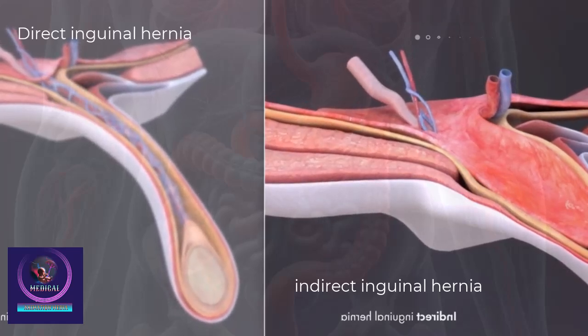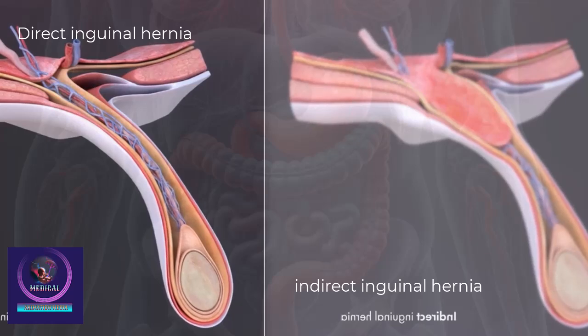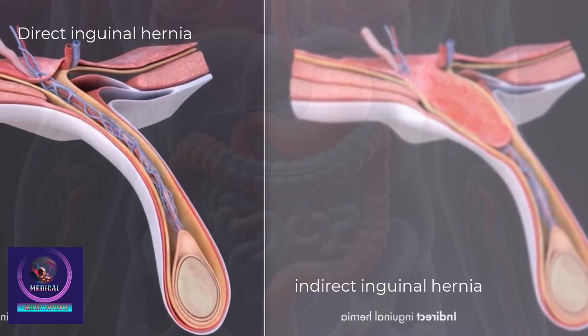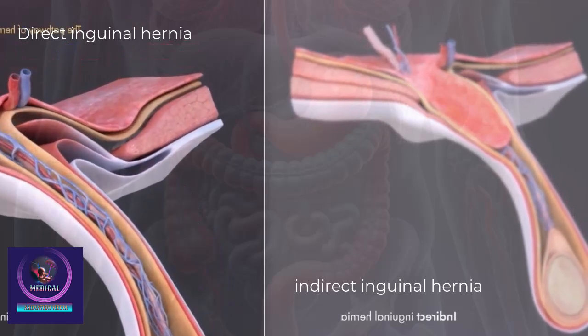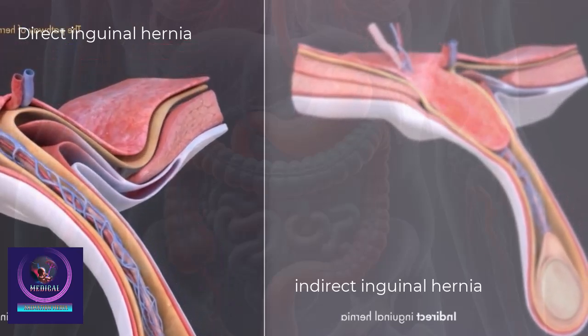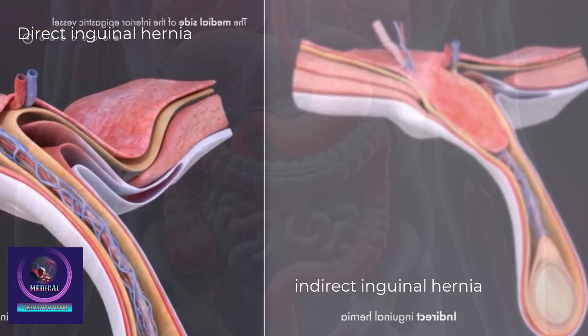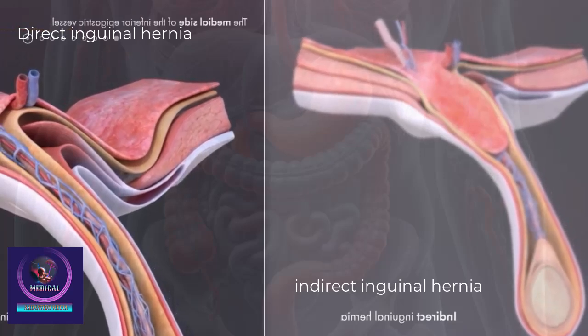Direct inguinal hernia comes behind the superficial inguinal ring by penetrating the abdominal wall. It occurs on the medial side of the inferior epigastric vessel.